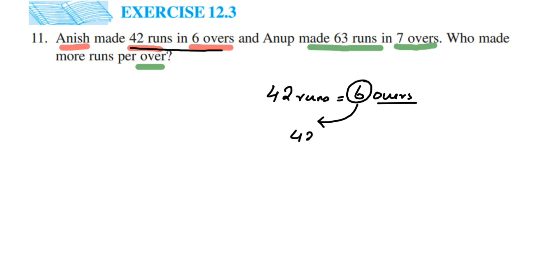So it will be 42 divided by 6 runs will be equal to 1 over. So here I have divided 42 by 6. I hope it is clear.